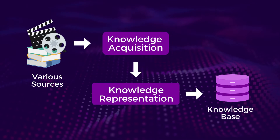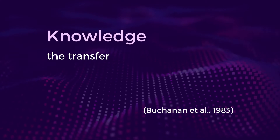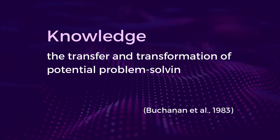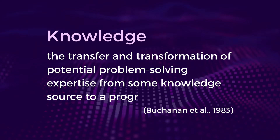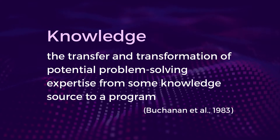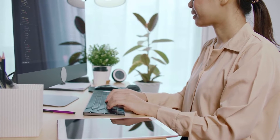To build an expert system, knowledge will need to be acquired from various sources. According to Buchanan et al., knowledge acquisition is defined as the transfer and transformation of potential problem-solving expertise from some knowledge source to a program. This is a process where knowledge from expertise is extracted for use in a knowledge system. It requires a knowledge engineer to mediate between the expert and the knowledge base — eliciting knowledge from the expert, refining it in conjunction with the expert, and representing it in the knowledge base using a suitable knowledge structure.